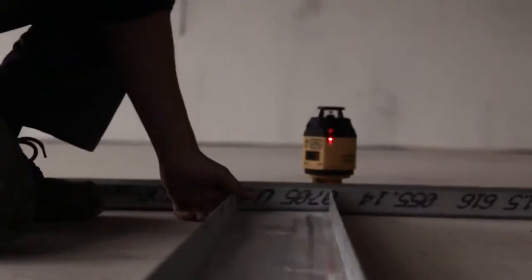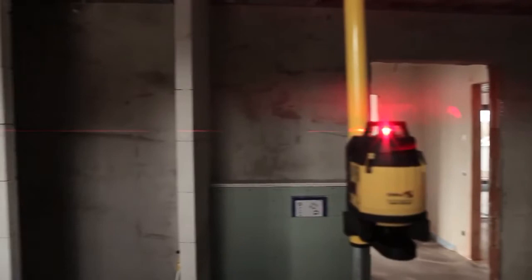The two vertical lines form a 90-degree angle, allowing the right angle to be transferred in one operation. The continuous 360-degree horizontal line is ideal for transferring heights.